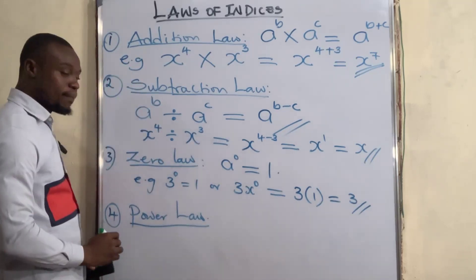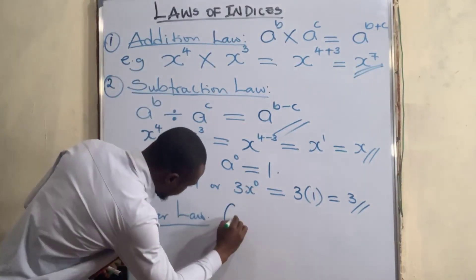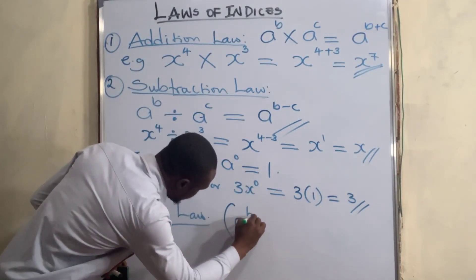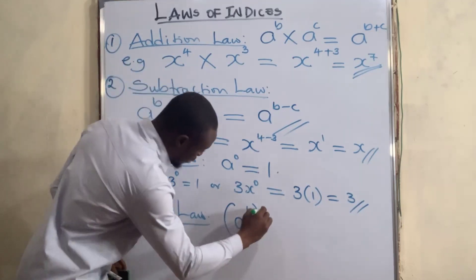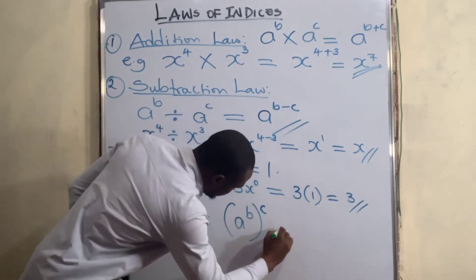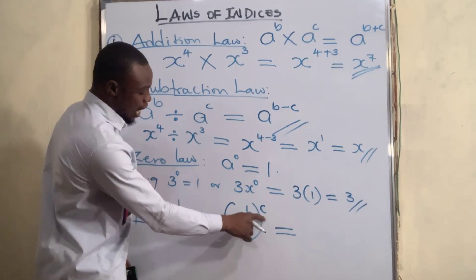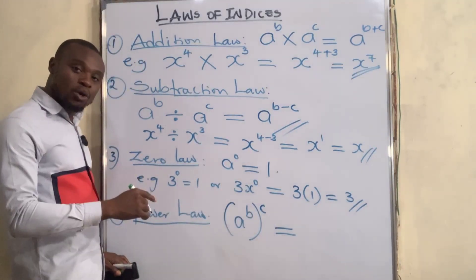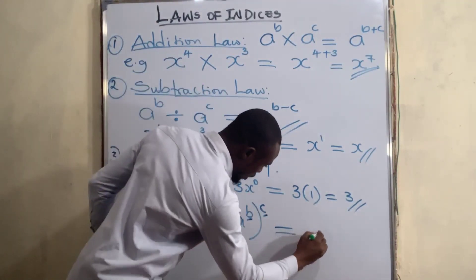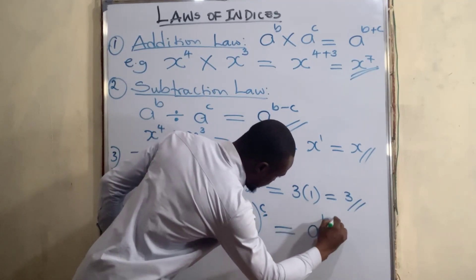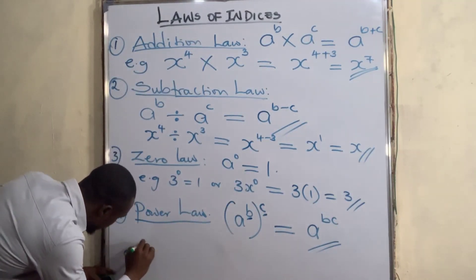The fourth law is called the power law, or the product law. The power law states that when you have an expression in index form inside a bracket, and there is also a power outside the bracket, the power inside the bracket multiplies the power outside the bracket. So you get a to the power of b times c.